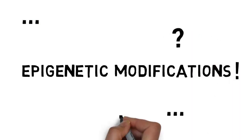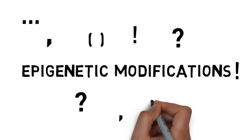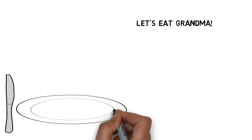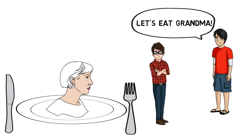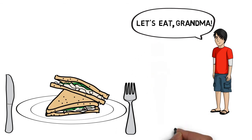Epigenetic modifications can be thought of as cellular punctuation. The words, or DNA sequence, in the genetic code are identical, but changing the epigenetic modifications drastically changes the meaning, similar to the way punctuation affects the meaning of a sentence.